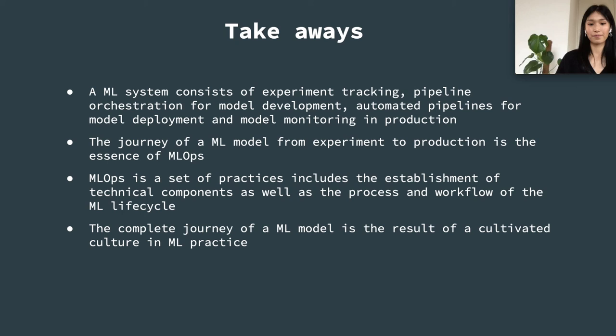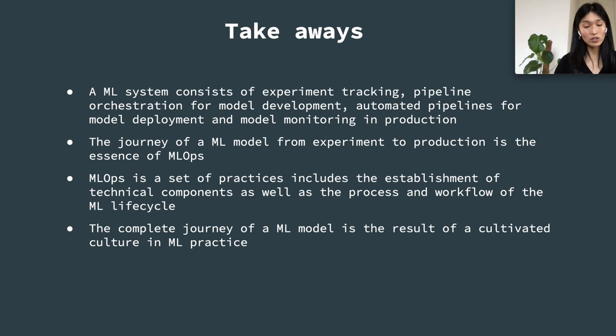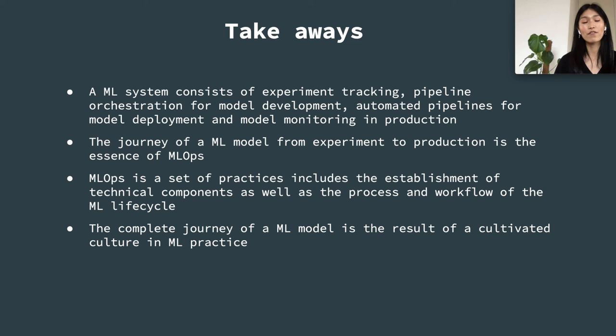This is the overview of the journey of a machine learning model from experiment to production. A few takeaways: a machine learning system consists of experiment tracking, pipeline orchestration for model development, automated pipelines for model deployment, and model monitoring in production. The journey from experiment to production is the essence of MLOps — a set of practices that includes the establishment of technical components as well as the process and workflow of the machine learning practice lifecycle. The complete journey is not only the result of a technical system, but also a cultivated culture in machine learning practice. Thank you so much for your time. Have a great day.